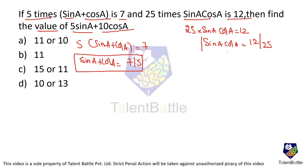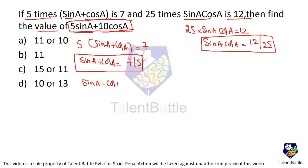We know sin a + cos a and sin a · cos a, so we need to find the individual values of sin a and cos a. To do that, we'll work out (sin a - cos a)² — or equivalently (cos a - sin a)².